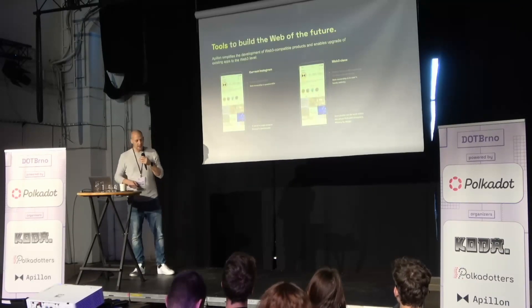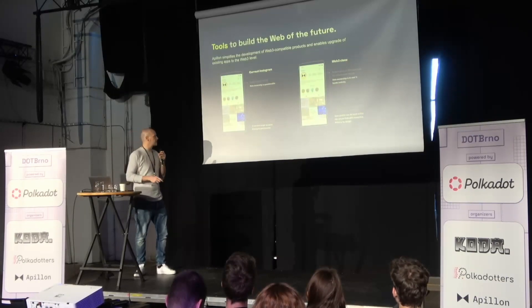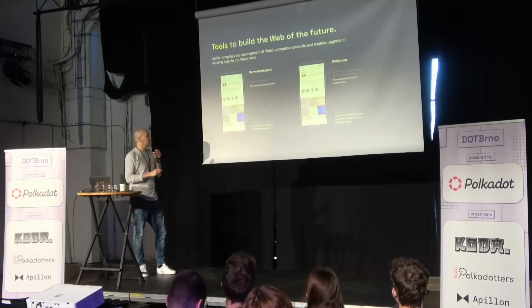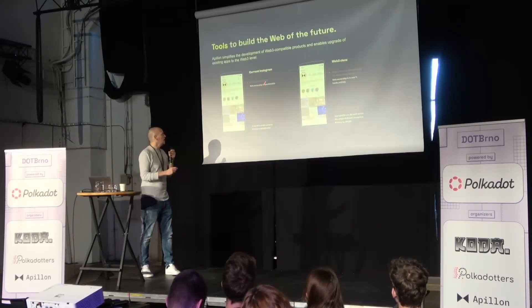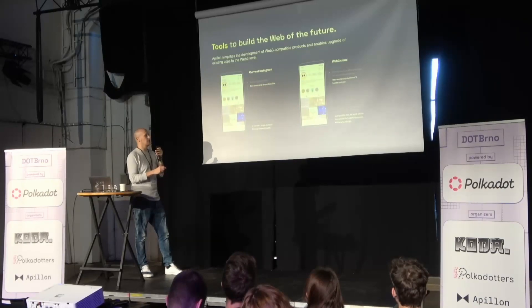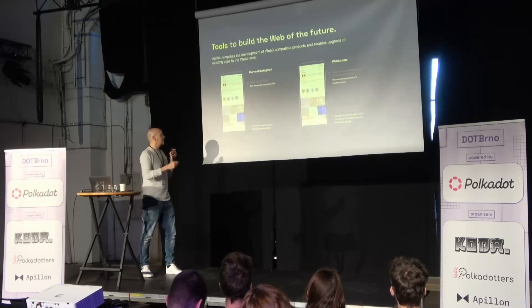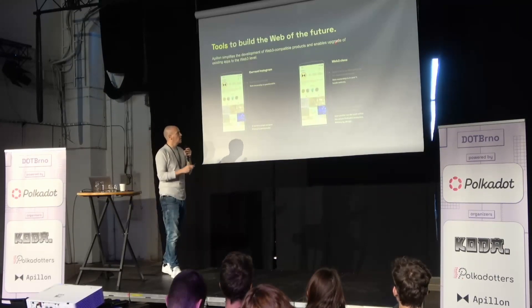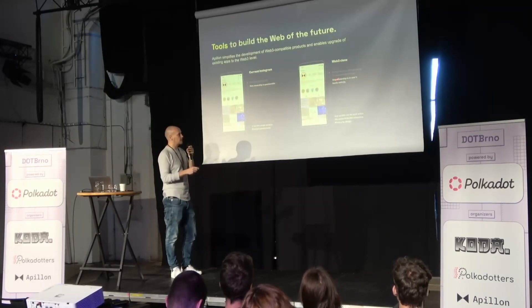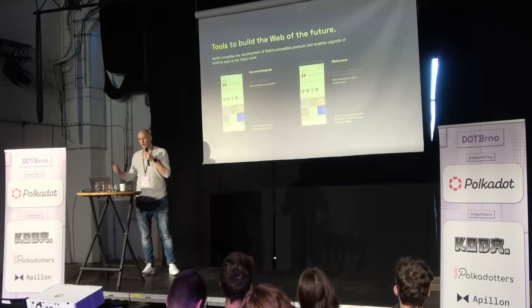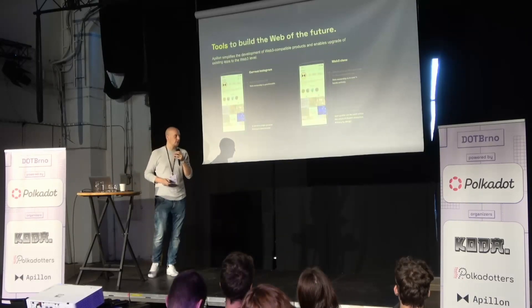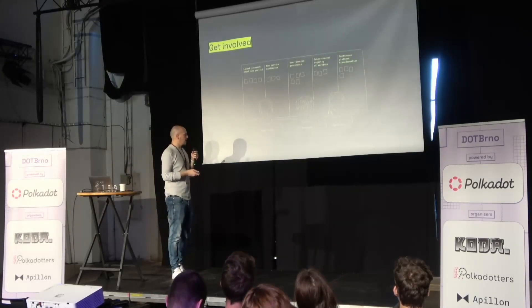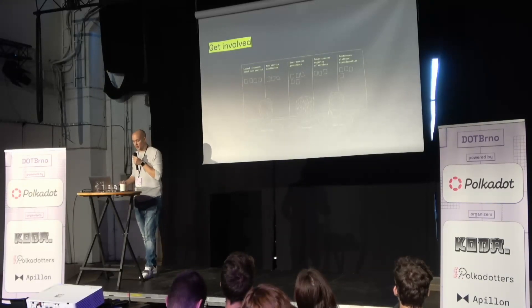To give a real-world example most of us know: a simple Instagram clone — how could it look on a web3 ecosystem? Current Instagram has questionable data ownership — Meta, Cambridge Analytica, and so on. User profiles are served centrally and everything is controlled by Meta; the user has no control or copyrights. With a web3 clone, you could store your data on IPFS with Crust, create a digital identity on Kilt, and be the owner of the content you upload.